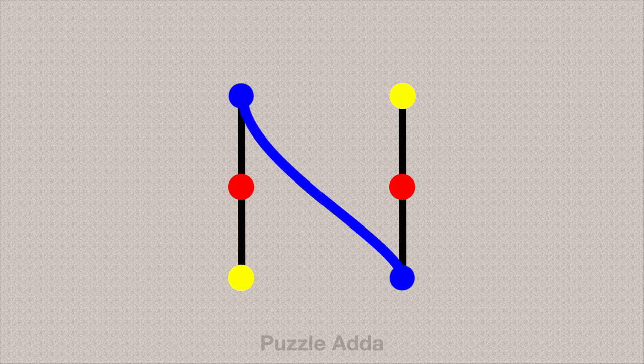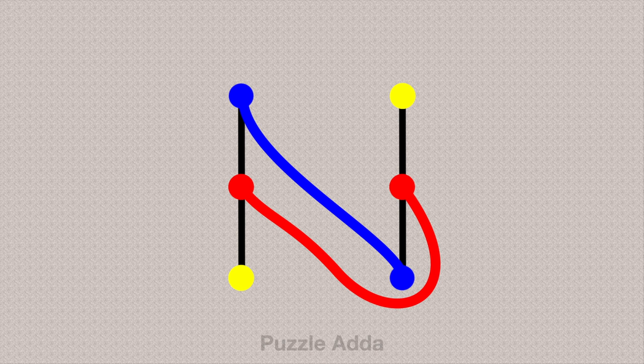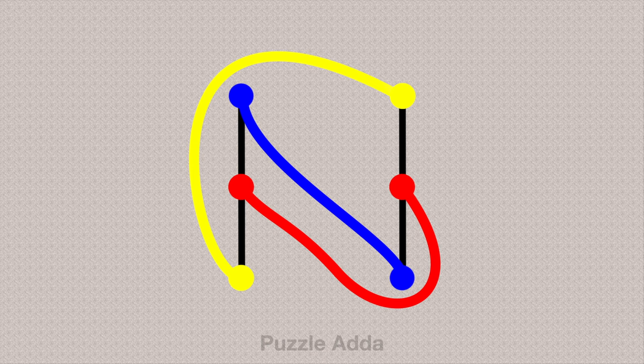First, we will connect the blue dot like this. Then we will connect the middle red dot with the red dot like this from the same side. Now you can see, we can easily connect the yellow dots from the other side without intersecting any other lines.